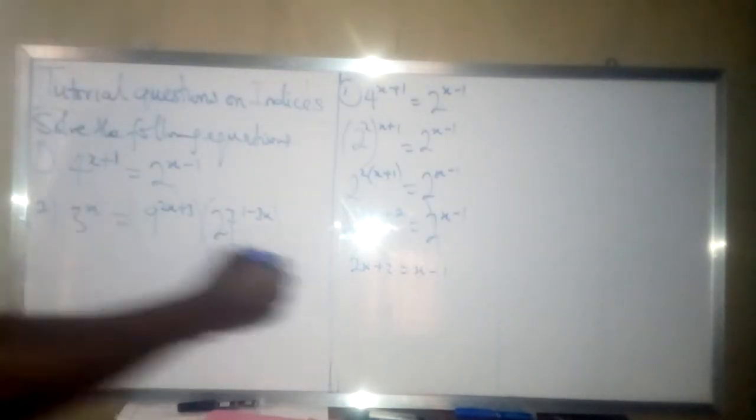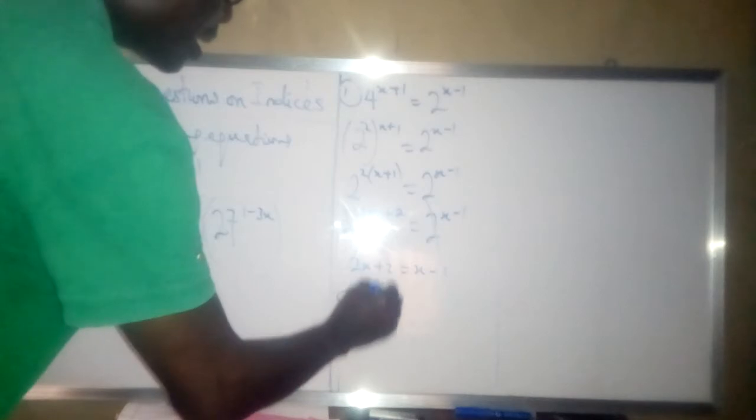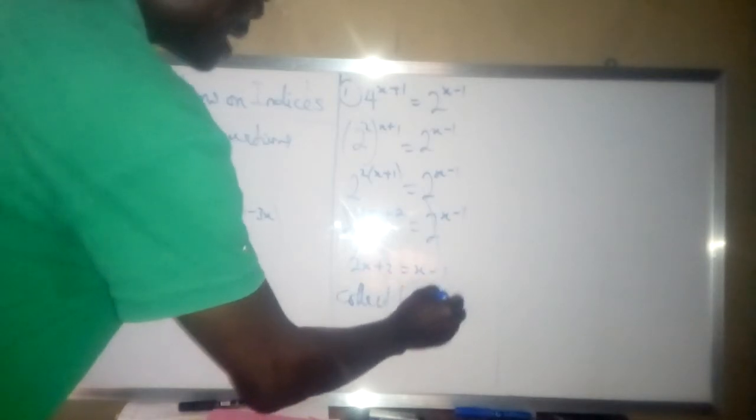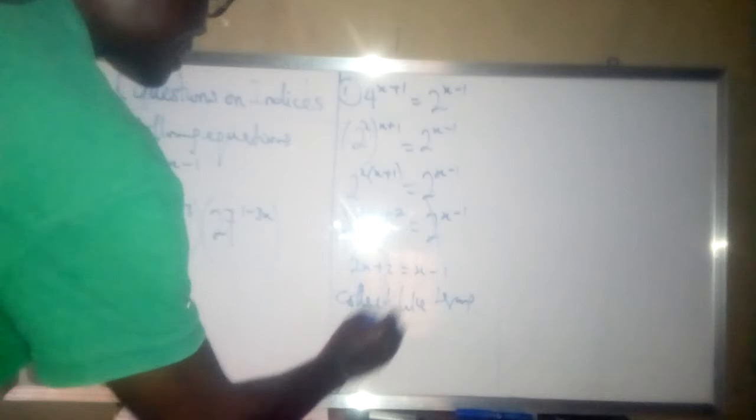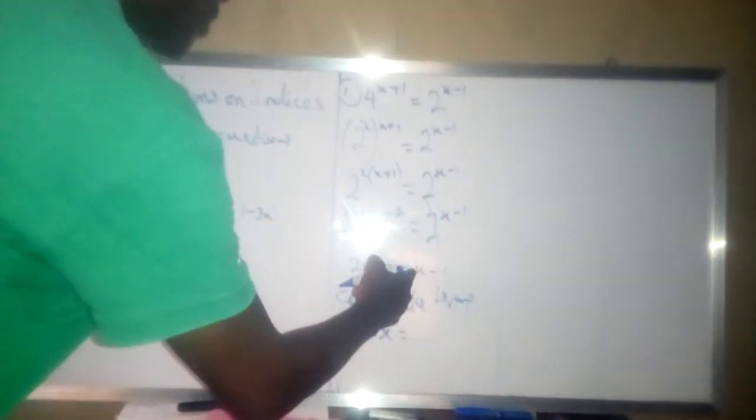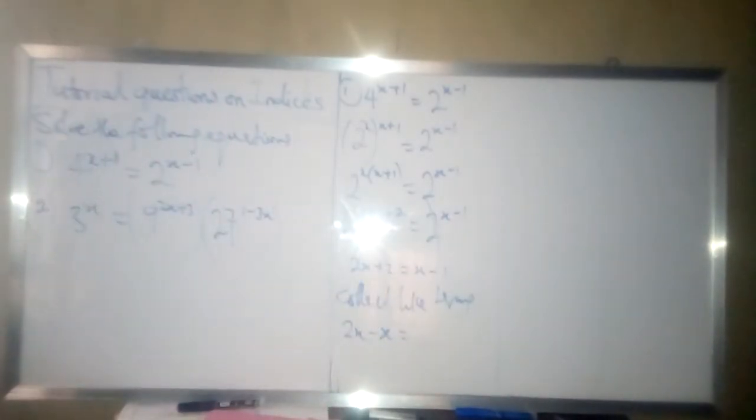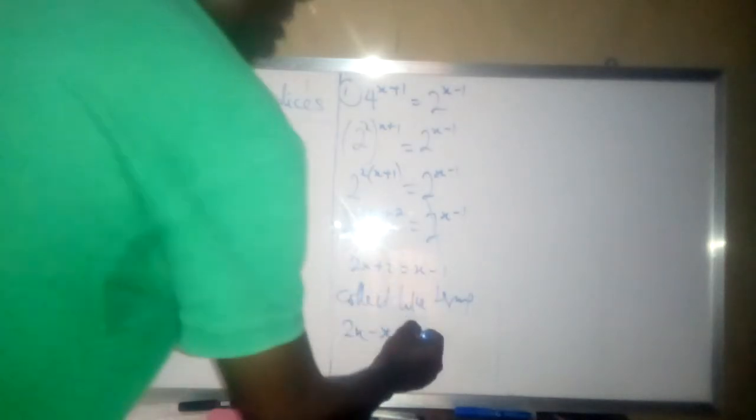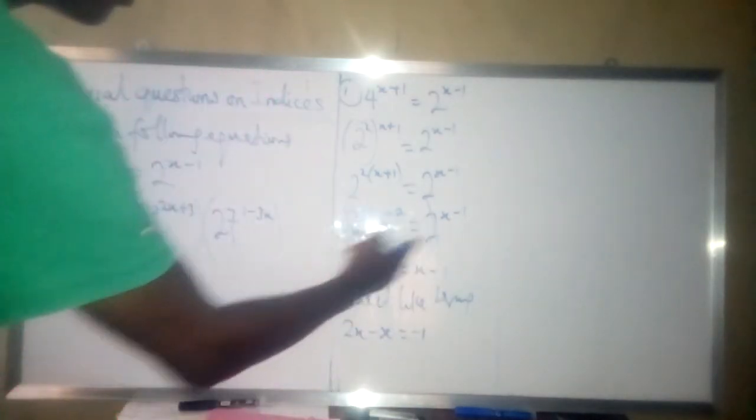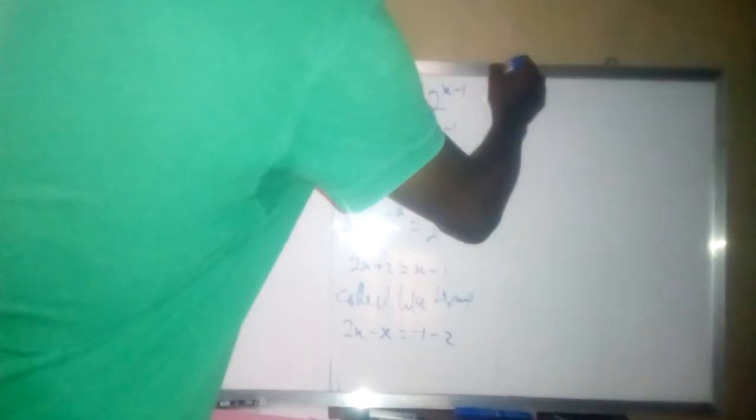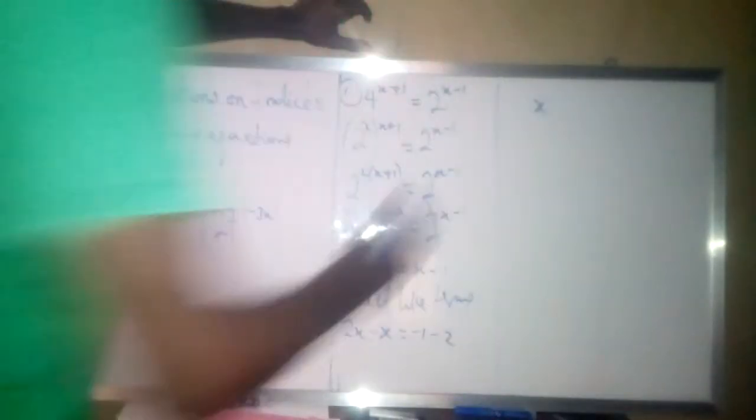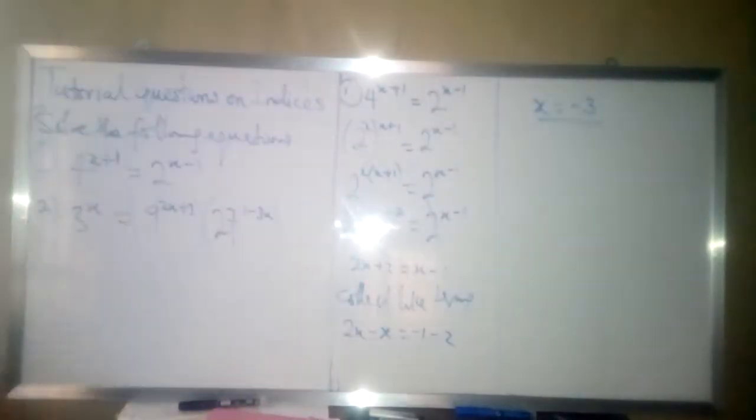So by the time we equate this, the next thing is to collect like terms. So by the time you collect like terms, you have 2x minus x is equal to, because by the time plus x comes to the left hand side of the equation it becomes minus x. It is equal to minus 1 then plus 2 going there because minus 2. So you have x, because 2x minus x is x, is equal to minus 3. So that is that for the first question.